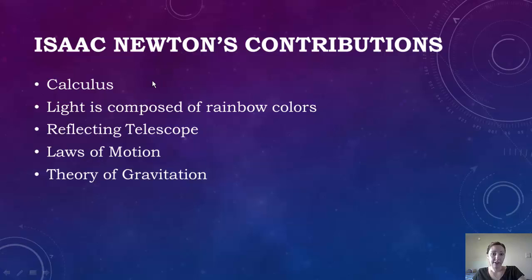First off, he invented calculus, which I know that we all love and enjoy today. He came up with the idea that light is composed of rainbow colors, so all of the colors that you see are because light is reflecting off of them, and that's the reason why you see all these different colors.